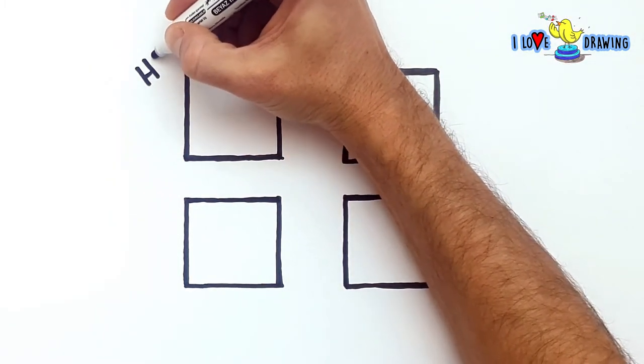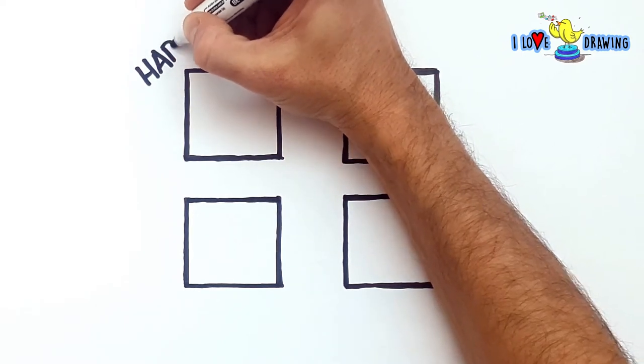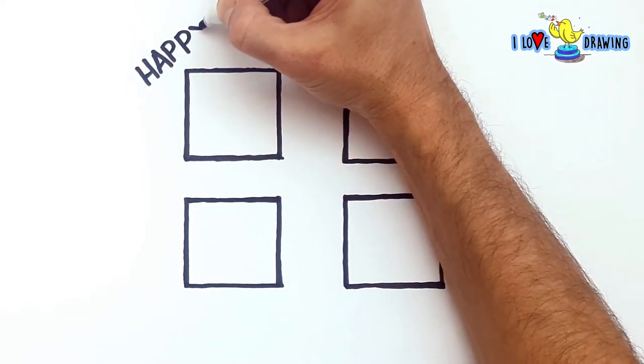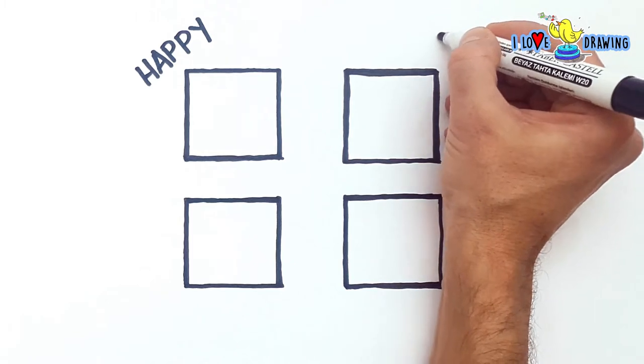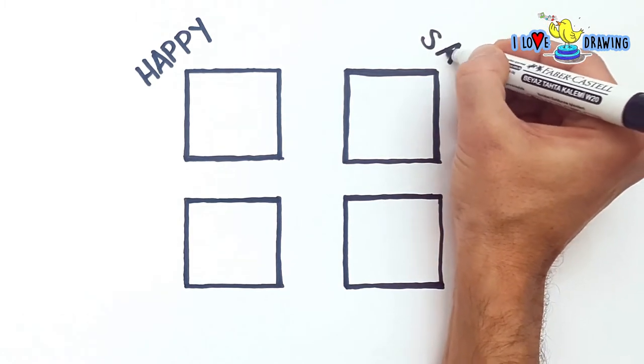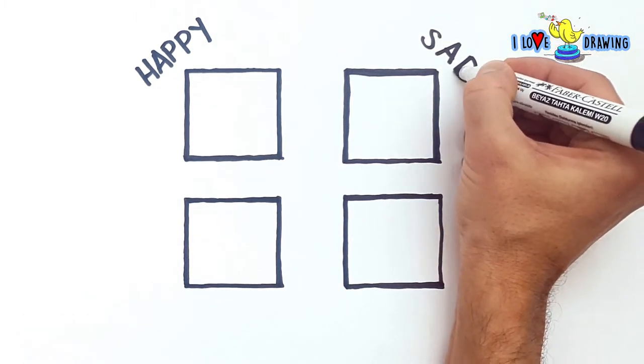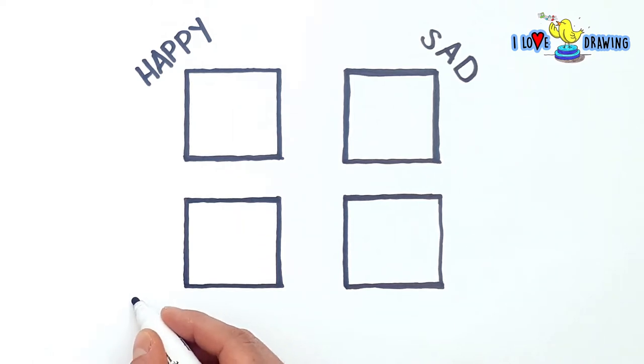Our first character will be feeling happy. So, I write that down on the upper left corner. Our second character will be feeling sad. Poor thing. Our third character will be feeling angry.